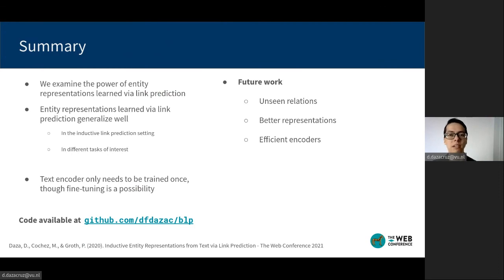That generalizes to unseen entities in link prediction and entity classification tasks, as well as information retrieval tasks with natural language queries that do not require fine-tuning the model. We expect that fine-tuning the encoder for other tasks results in further improvements.